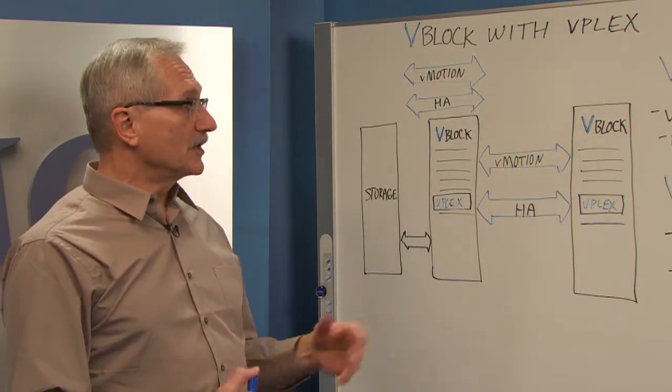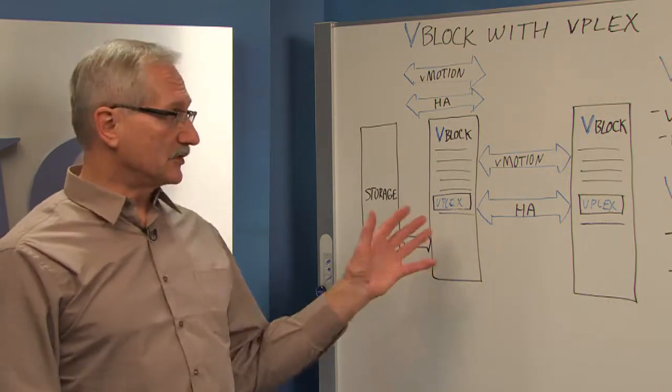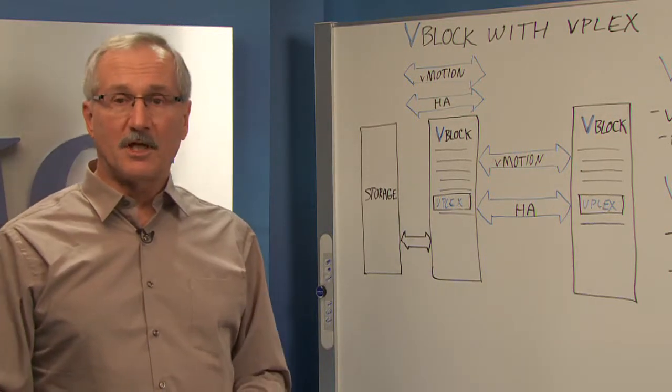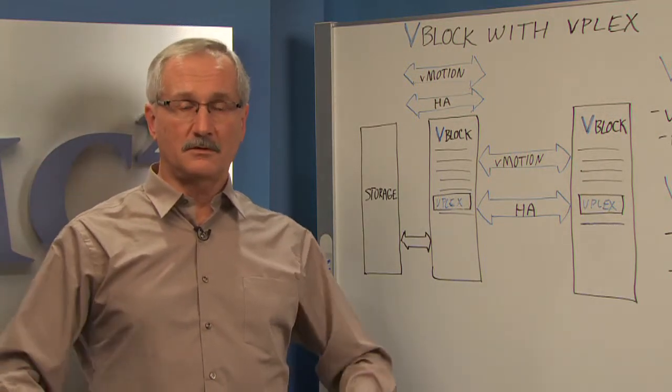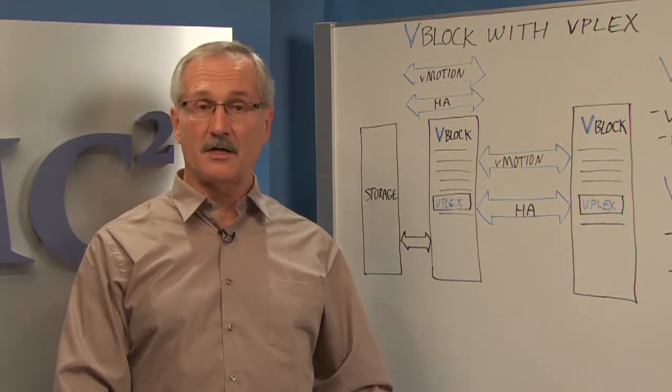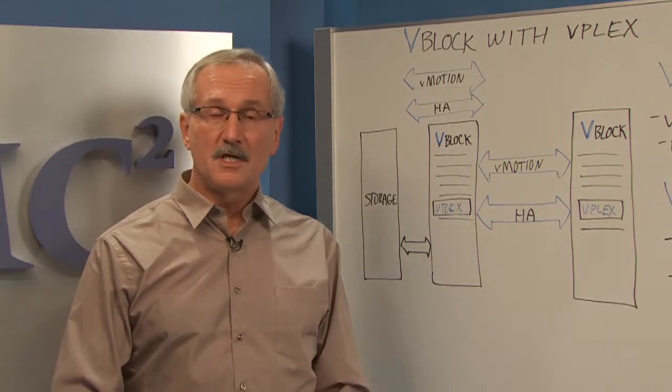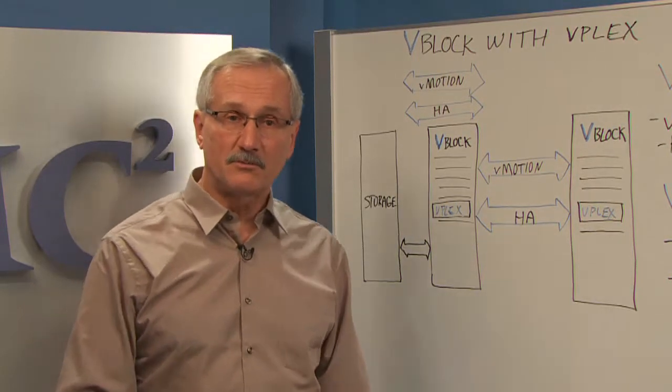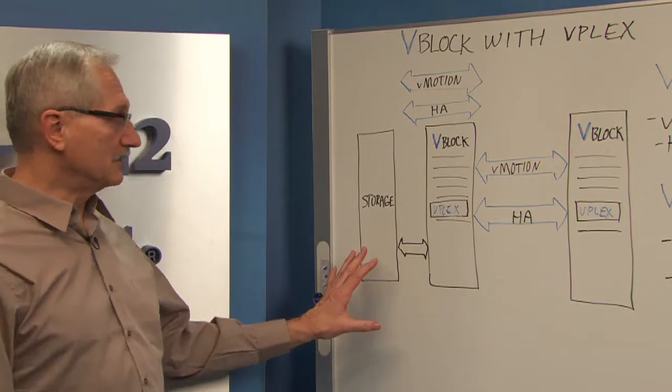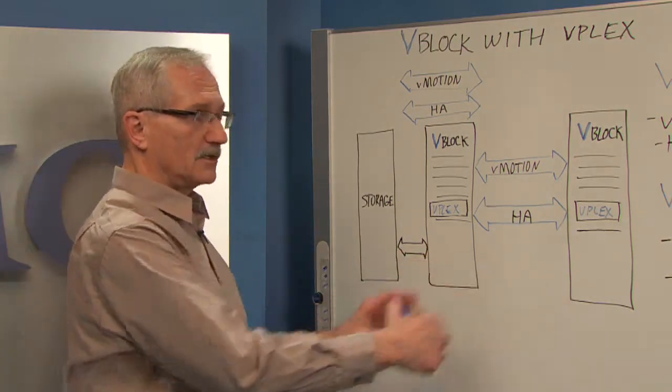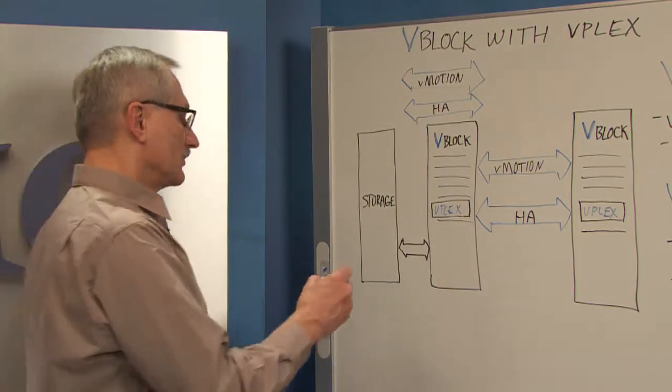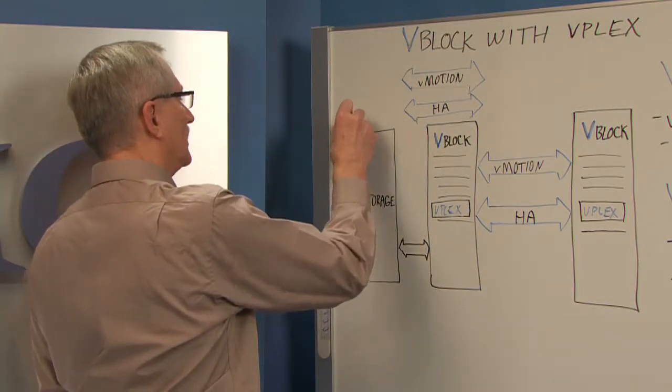So this gives you a couple of very interesting use cases besides just this high availability idea across sites. If you buy a converged infrastructure like vBlock, one of the first issues you have is you have data and applications running now. How are you going to get that into the vBlock environment? So one of the nice features is vPlex's mobility. So let's say you have some existing storage, all your applications are running in it. You buy a vBlock and you install it. Now you have to get all your data over into that environment. So there's this nice use case called OnRamp.